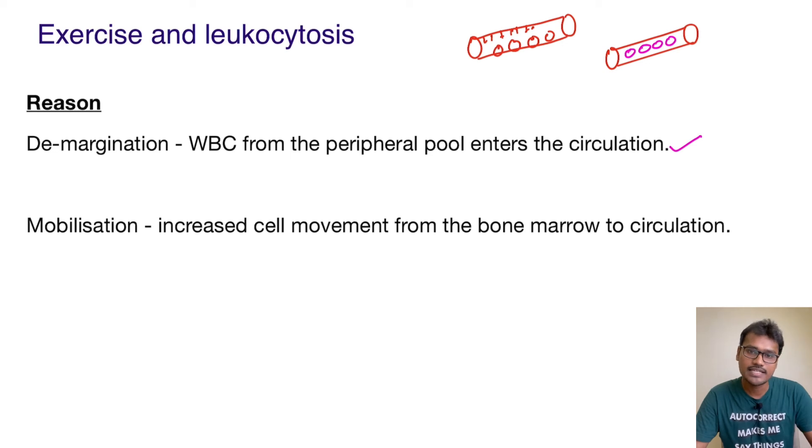Another reason is mobilization. When the person is exercising, the blood supply to the bone marrow is increased, and this causes increased cell movement from the bone marrow to the circulation.